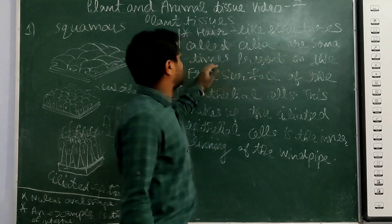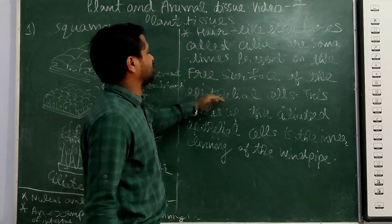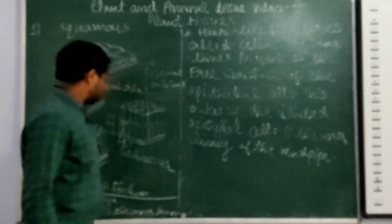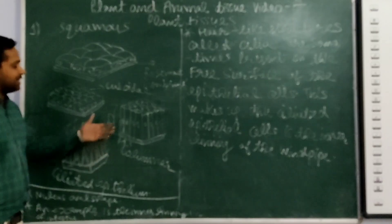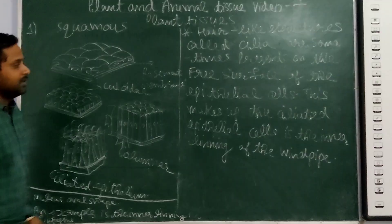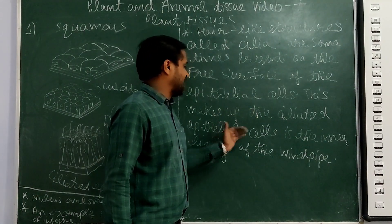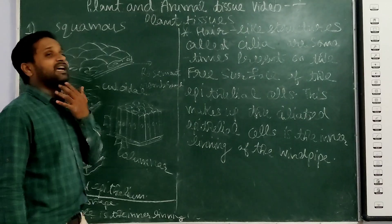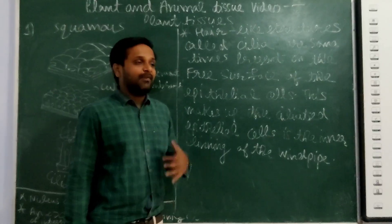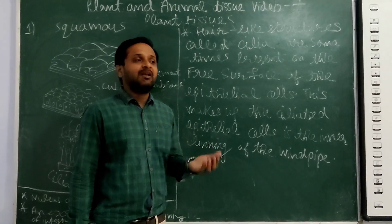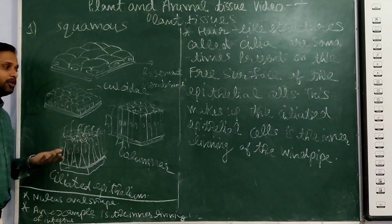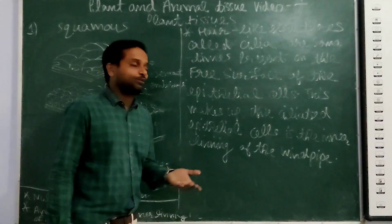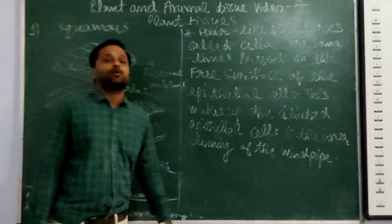The cilia are sometimes present on the free surface of the epithelium cell. The cilia give the epithelium effect on the free surface of the cell. For example, the inner lining of the windpipe has cilia. It helps to filter the air and stop unwanted particles.